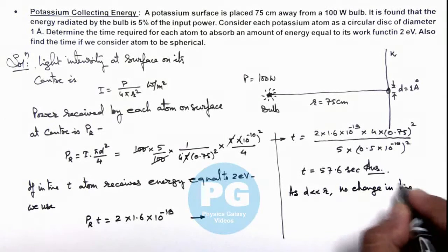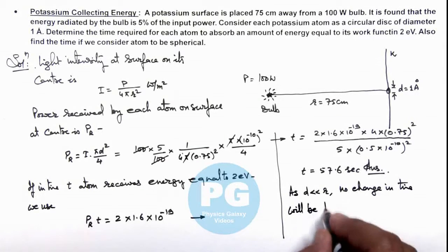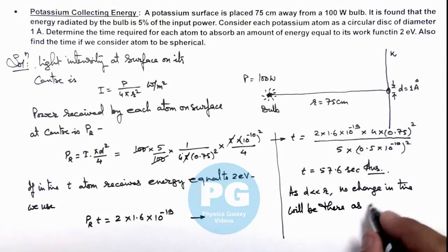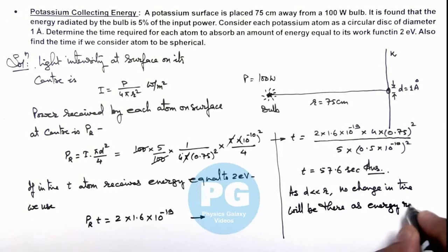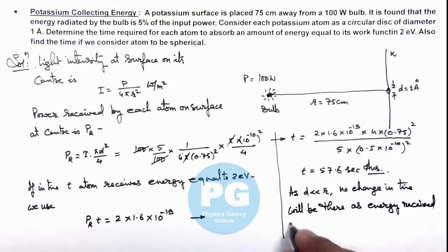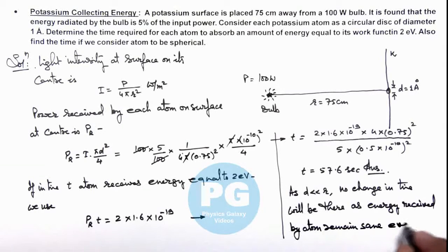No change in time will be there, as energy received by the atom remains the same even if it is considered as a sphere. Be careful about this: for small-sized objects, the projected area of a sphere is the same as that of a disc, so it won't change.